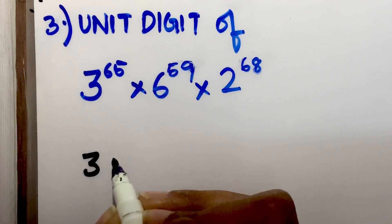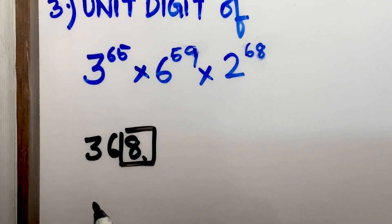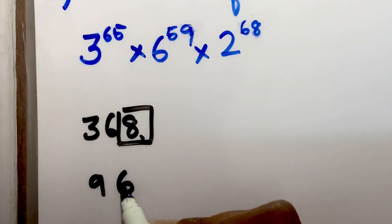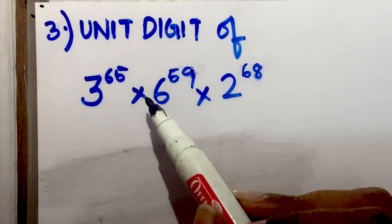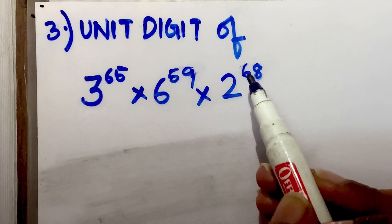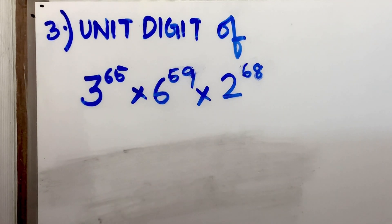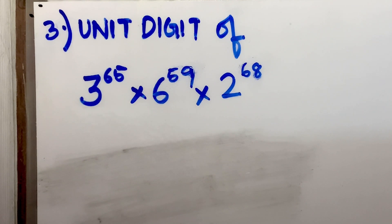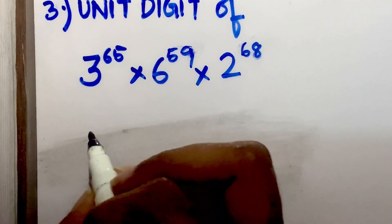First, easy concept: what is unit digit? For example, in the number 368, the rightmost digit is the unit digit. For example, 96, the unit digit is 6. Find the unit digit of 3 raised to 65 into 6 raised to 59 into 2 raised to 68. You multiply all and find the unit digit of that number. In this case, the second concept you need is cyclicity.